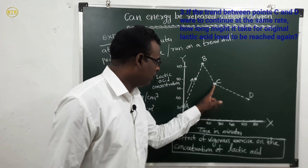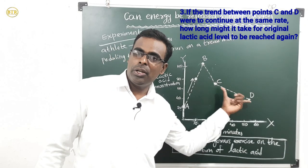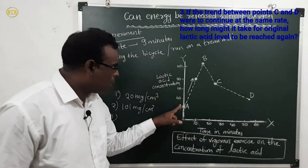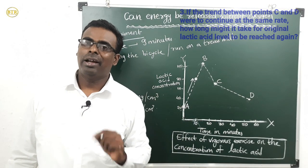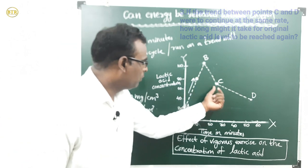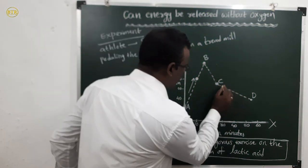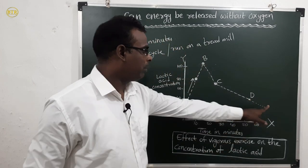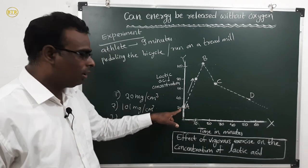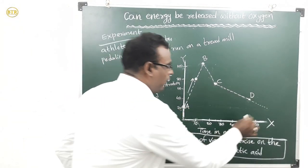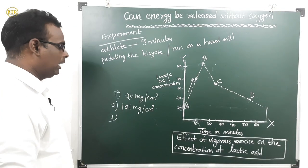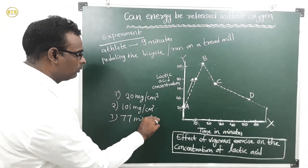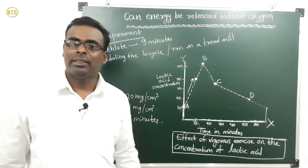The third question asks: if the trend between points C and D is continued at the same rate, how long will it take to reach the original level of lactic acid? You extend that line and find where it meets the original level. The answer is approximately 77 minutes.